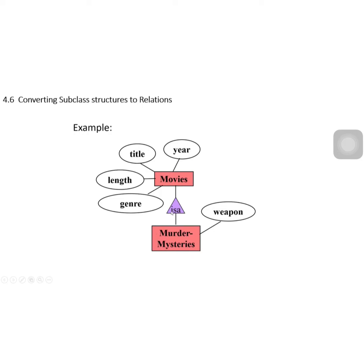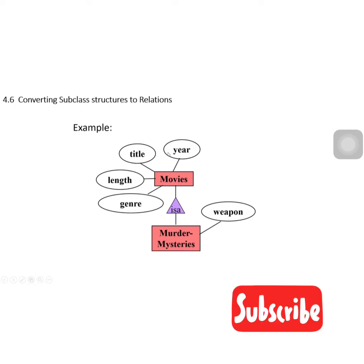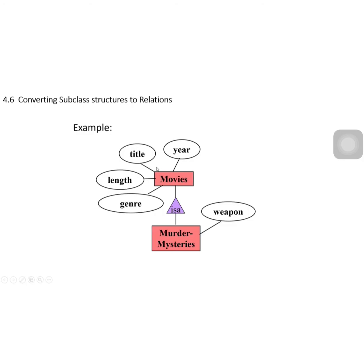Movies is an ER entity set. Murders is a subclass of movies, and murders has an additional attribute — weapon. For murders, there are five attributes: title, year, length, and genre are inherited from movies, and the fifth attribute is weapon.